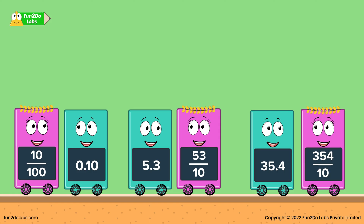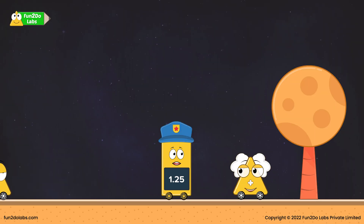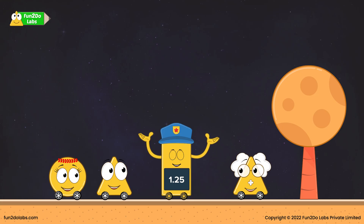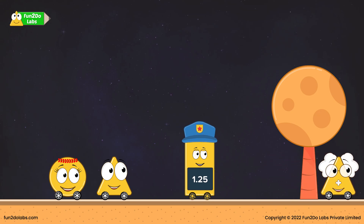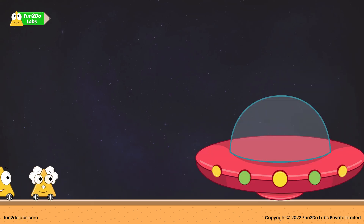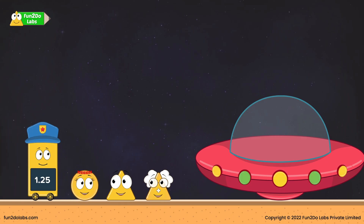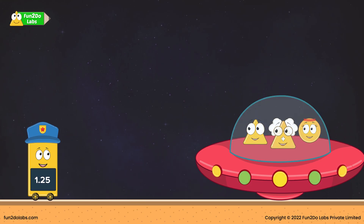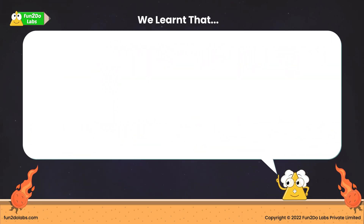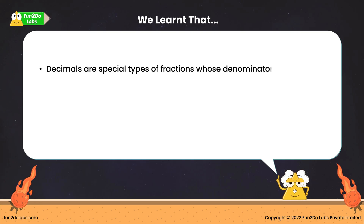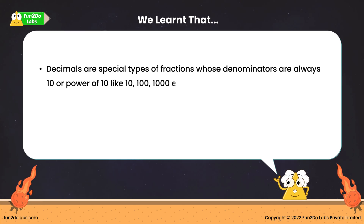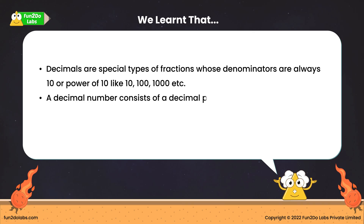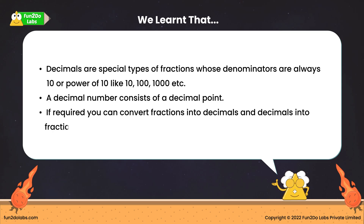Hurrah! Seeing them finally united feels so good. Decimal Planet is peaceful again. This would have not been possible without your help, says Mr. Decimal. Uncle Math and the kids are glad. It was a meaningful journey — one that not only helped them discover the relationship between fractions and decimals but also identify the importance of loved ones. We learned that decimals are special types of fractions whose denominators are always 10 or a power of 10, like 10, 100, 1000, etc. A decimal number consists of a decimal point. If required, you can convert fractions into decimals and decimals into fractions.